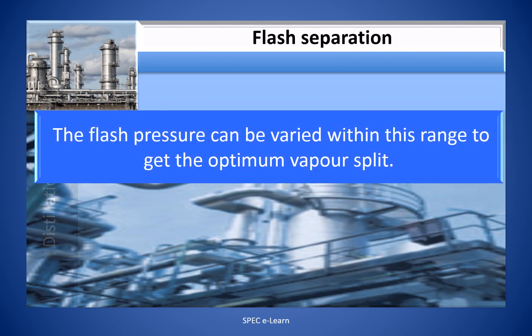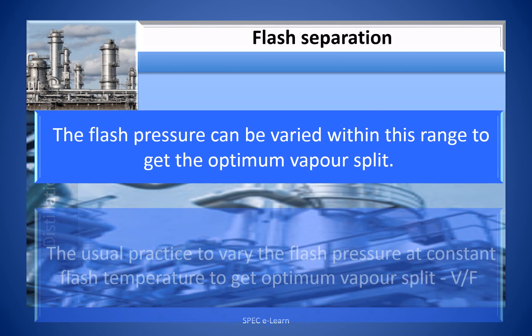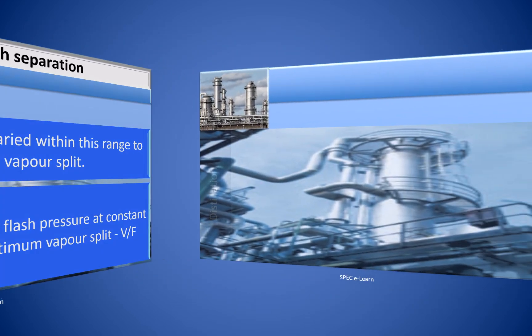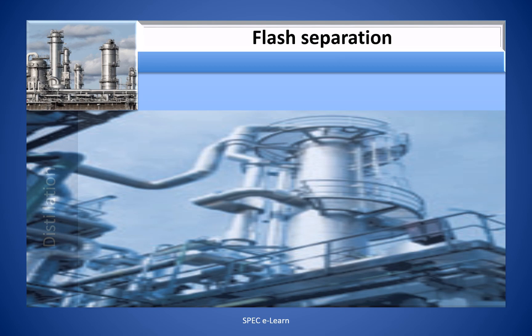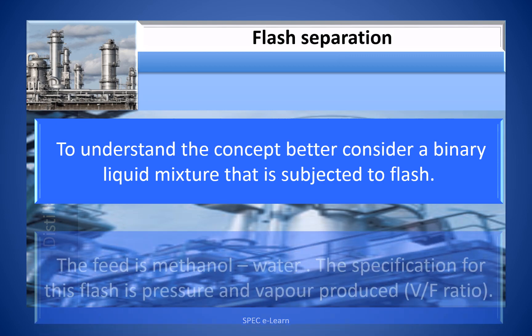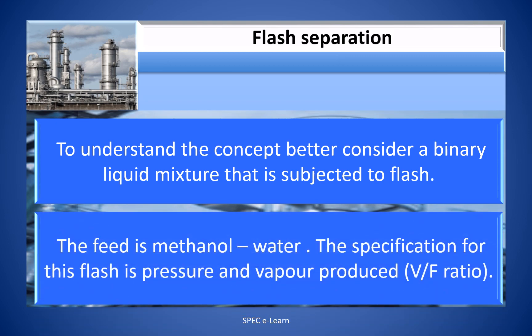The flash pressure can be varied within this range to get the optimum vapor split. The usual practice is to vary the flash pressure at constant flash temperature to get the optimum vapor split. To understand the concept better, consider a binary liquid mixture subjected to flash. The feed is methanol-water. The specification for the flash is pressure and vapor produced, i.e., the V/F ratio.